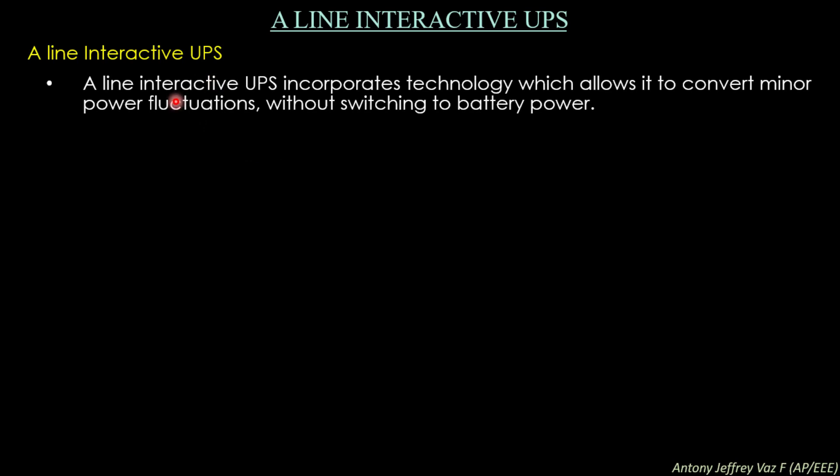The next type is the line interactive UPS. This incorporates technology that allows it to correct minor power fluctuations without switching to battery power. Unlike standby UPS, which immediately switches from AC to DC battery power upon any low voltage or fluctuation, the line interactive UPS corrects the AC line voltage at the input and delivers it to the output device at the required level.